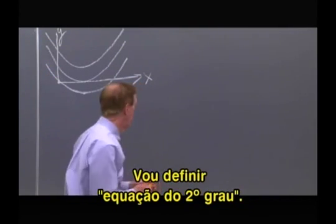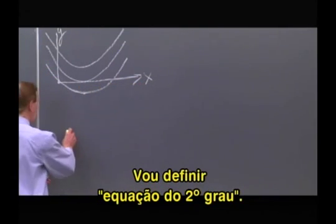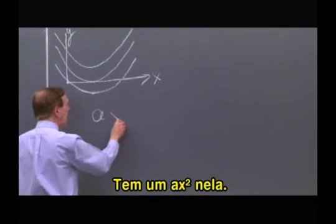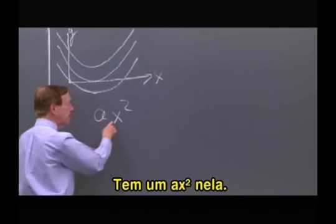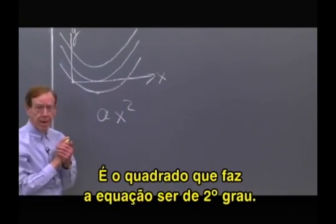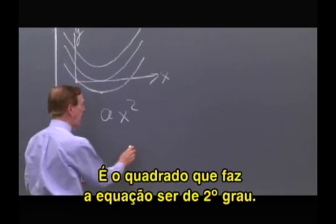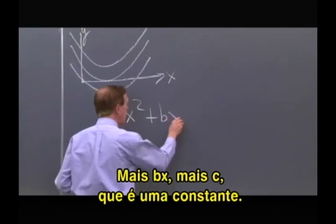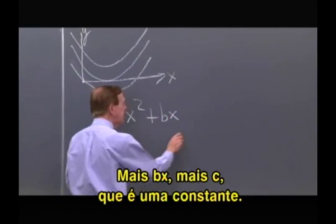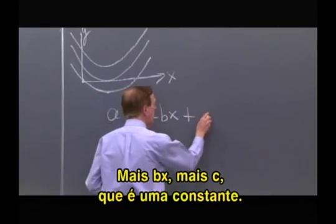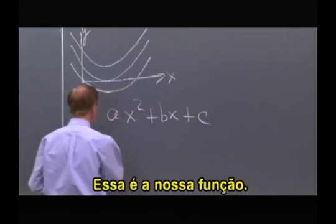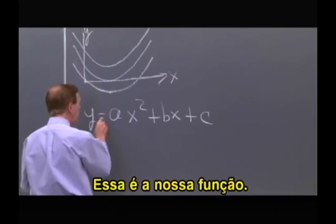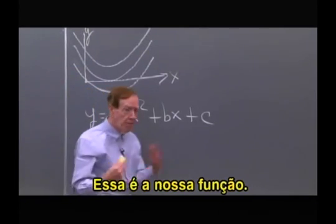So let me say what is a quadratic. There's an ax squared — it's that squared that makes it a quadratic — and a b times an x, and a c, a constant. So that would be our function.